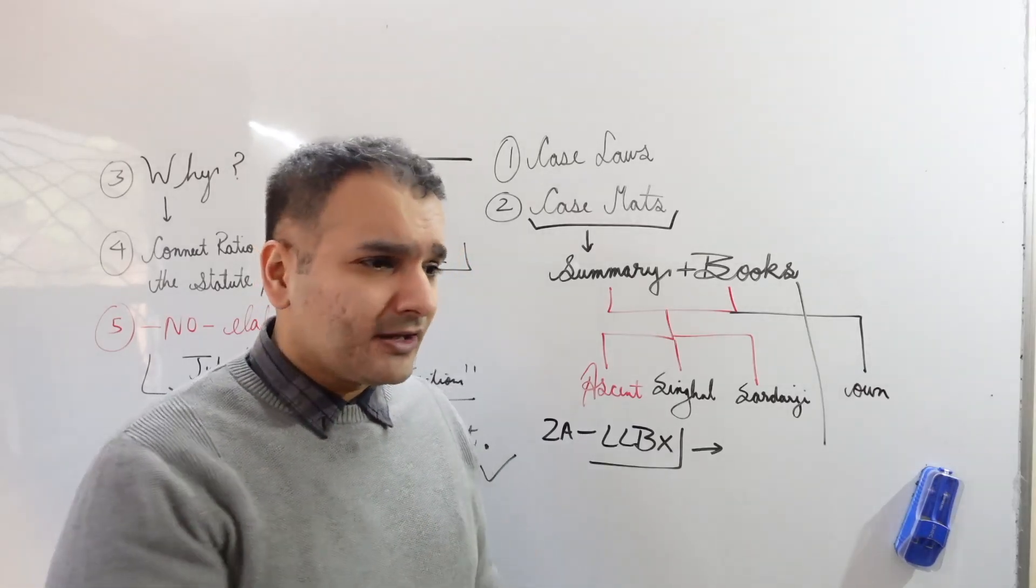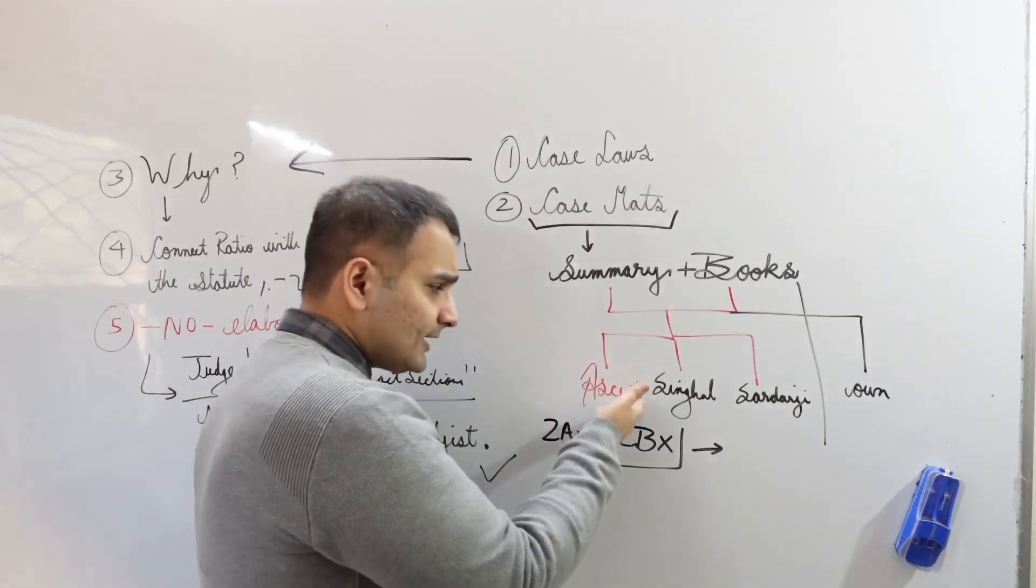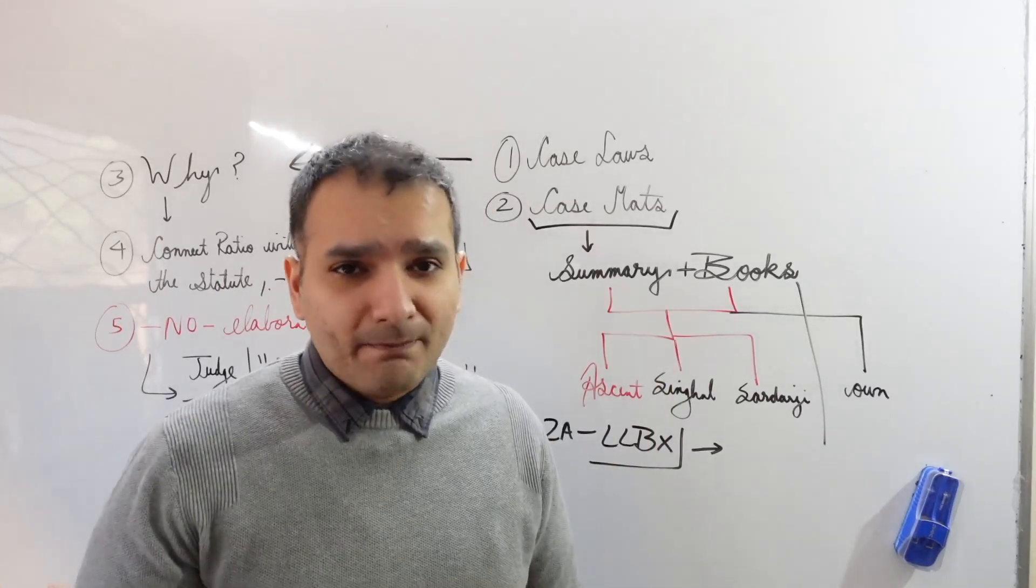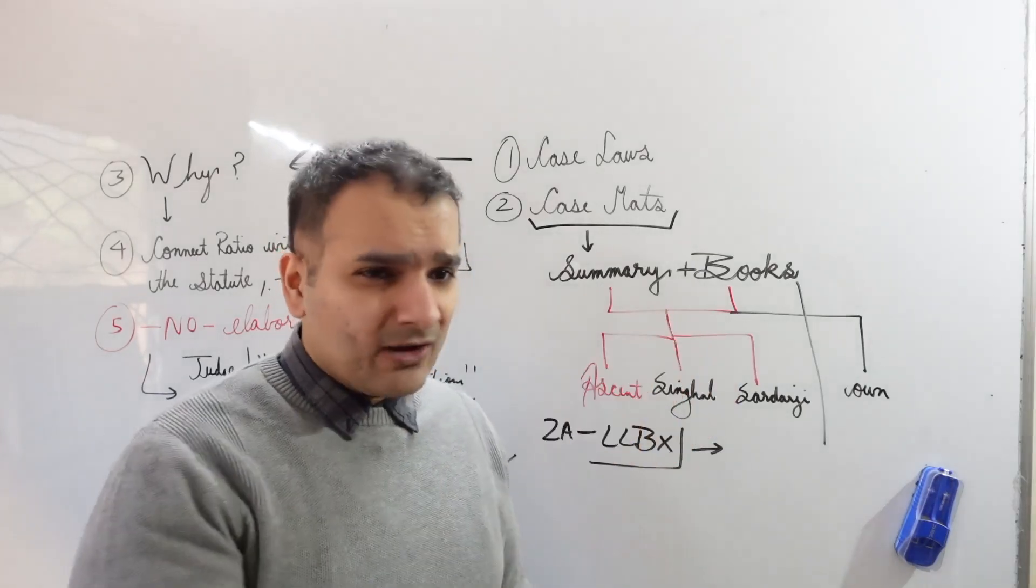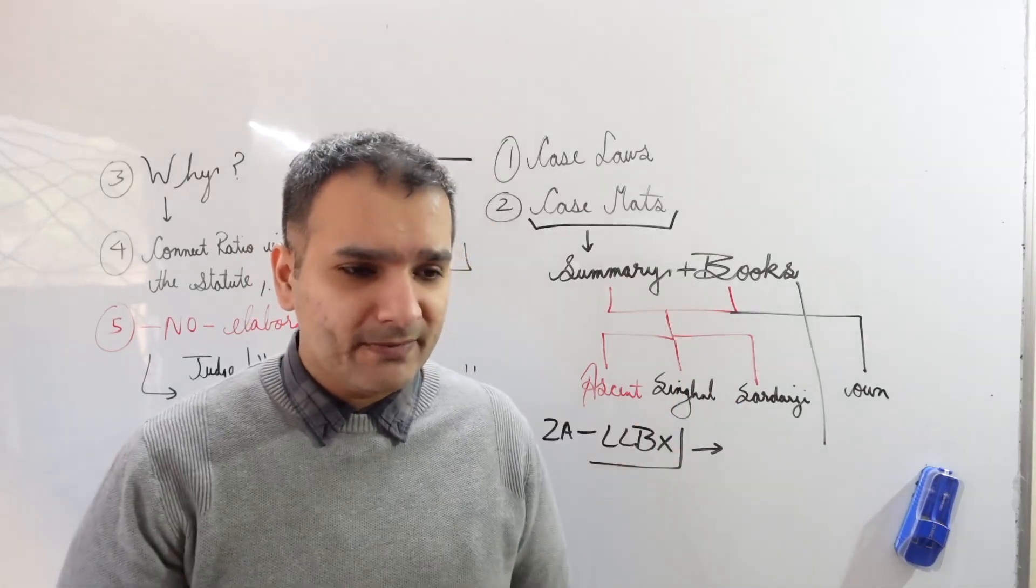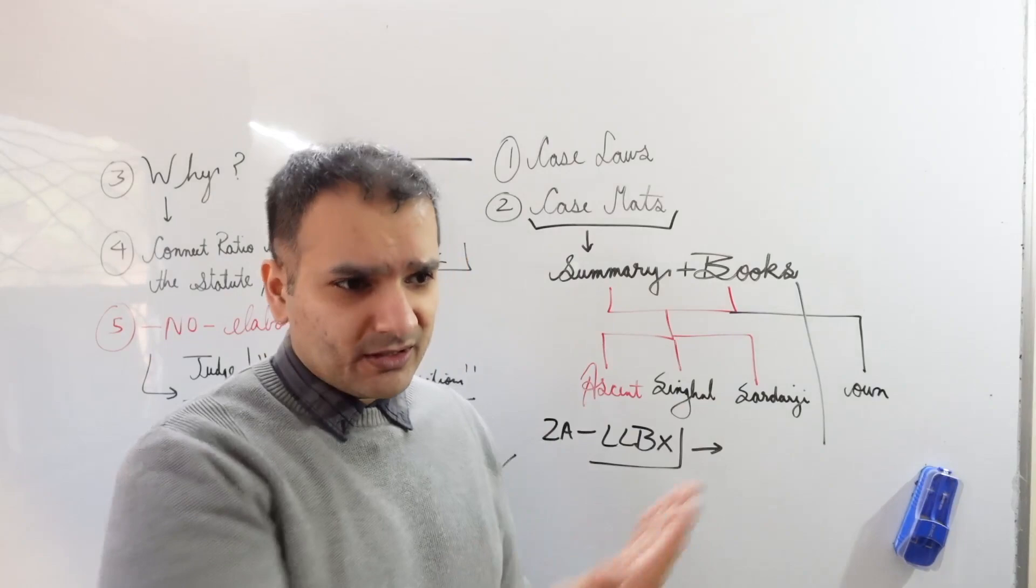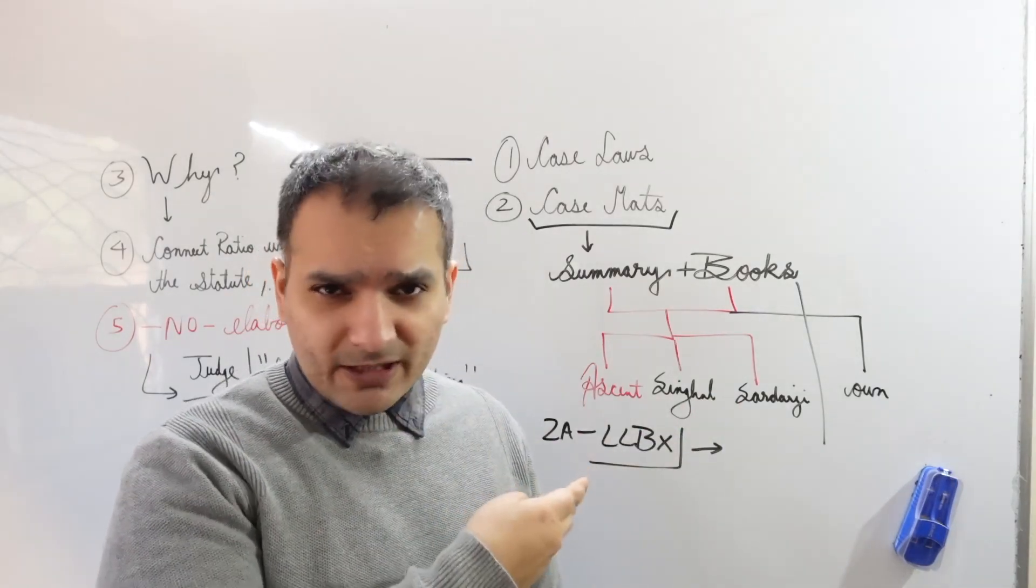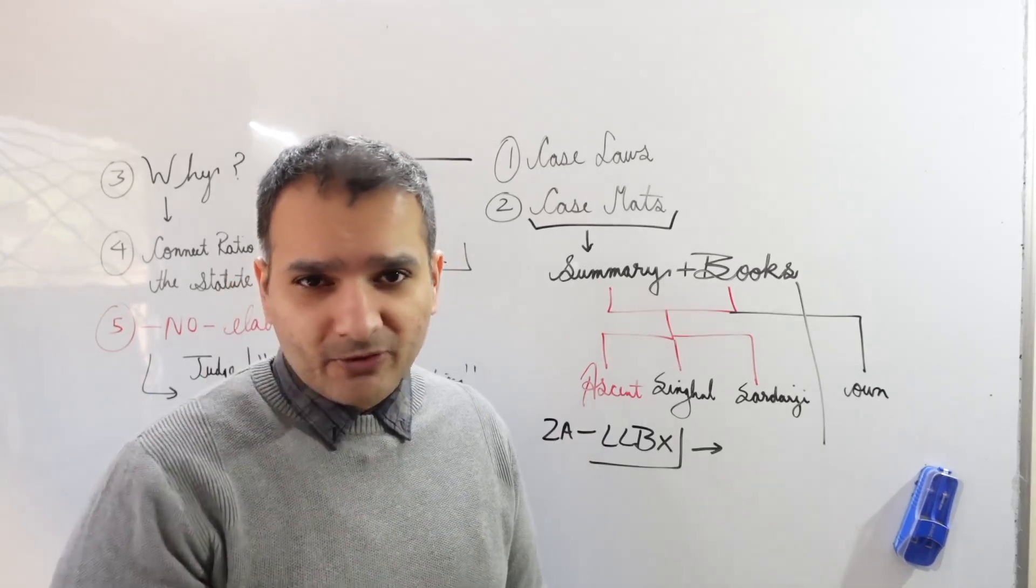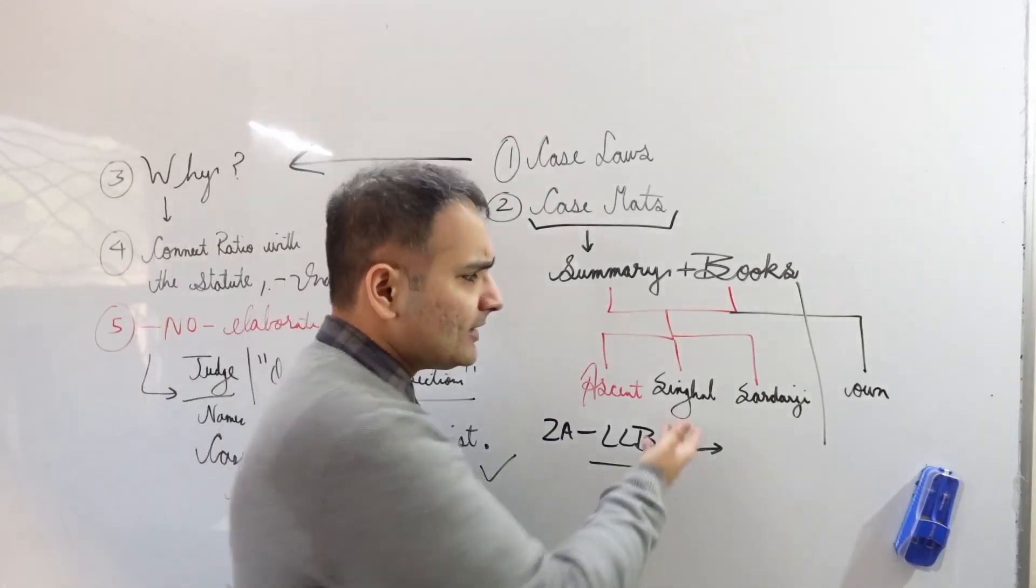What do these things contain? They contain summaries of case laws coupled with extracts from the books - whether it's Avtar Singh, GP Singh, Bangia, MP Jain, whatever - certain extracts from books and basically the ratio of the judgments from the case mats. I'll just pop this guy's number on the screen. Since it's been the pandemic, the smaller business guys are struggling, and if you're in Delhi and can reach these shops physically, please do, because every online platform takes its own cut and the margin is very thin.